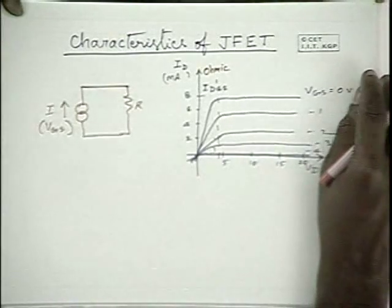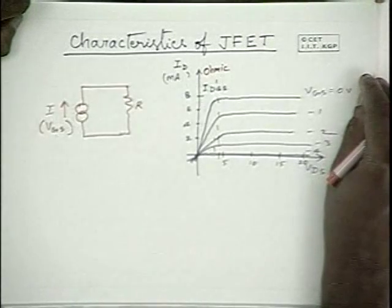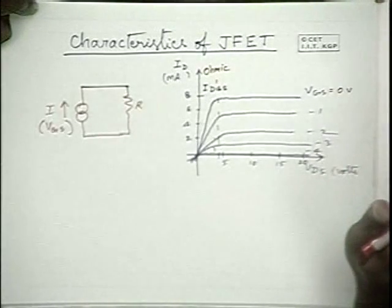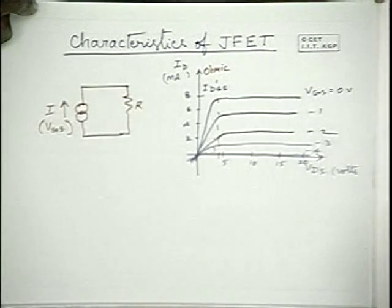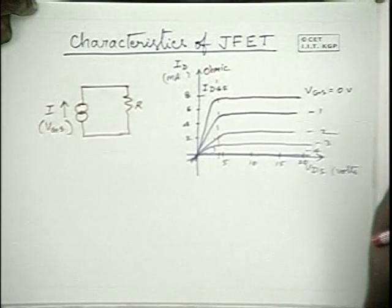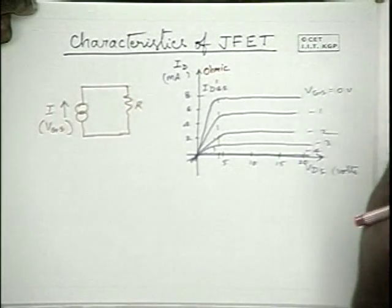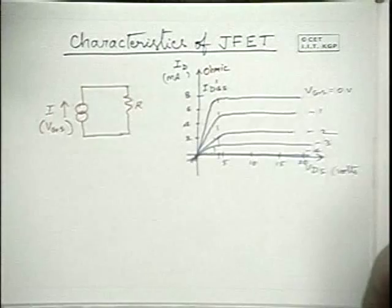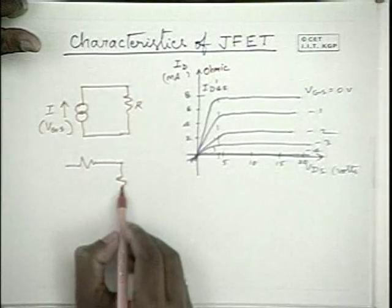Typically, in applications like automatic gain control in your home receiving sets, like either a TV receiving set or a radio receiving set, you may be close to the transmitter or far away, and still it should be able to work. The receiving set should have an automatic gain control within itself, and in such applications the voltage dependent resistance can be used. Suppose you use a potential divider; the input is applied to a potential divider and you take the output from the center tap. If the series resistance is increased, you will have low voltage at the output.